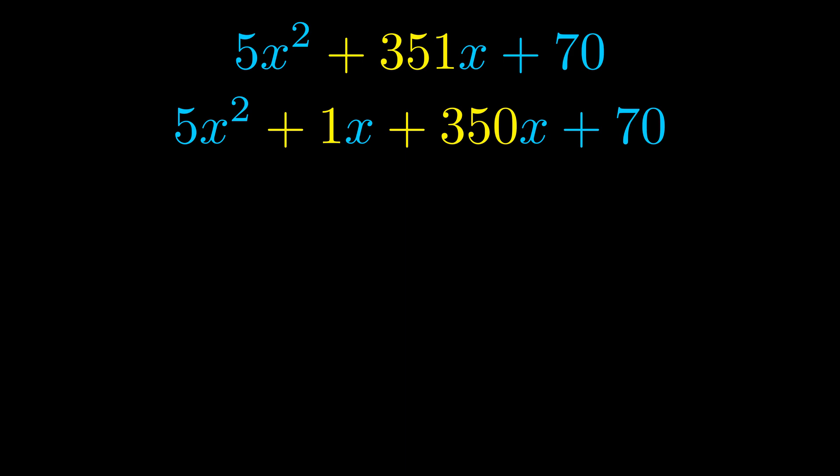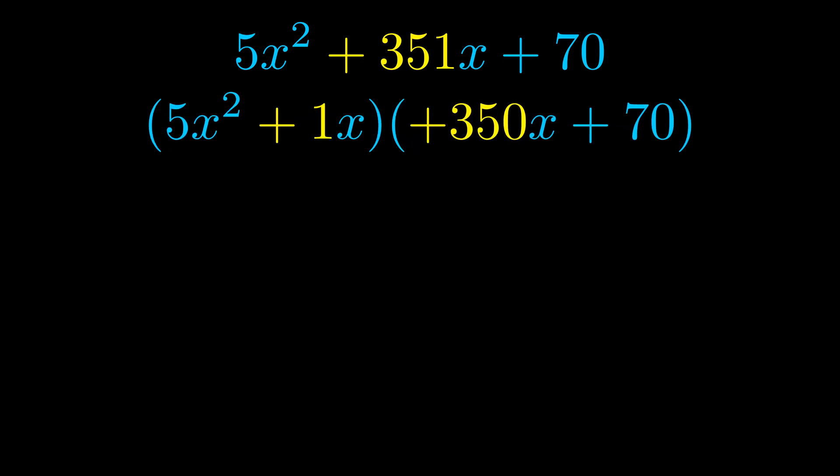Once we've done this, we go ahead and put parentheses around the first term and the last term. And we do that so that we can take the greatest common factor out of both terms. We can see the greatest common factor is now outside in green. Notice also how what remains inside of the parentheses is the same in both cases. The blue values are the same.